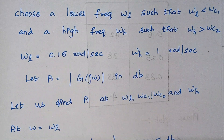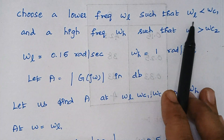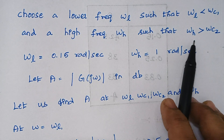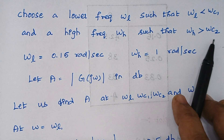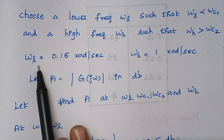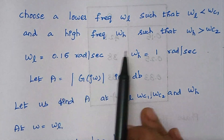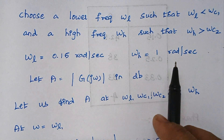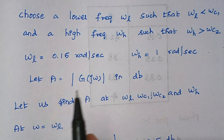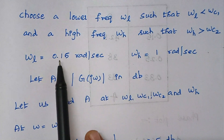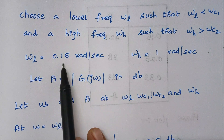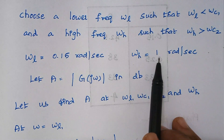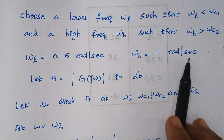Now we have to select two frequencies such that ωl is less than the first corner frequency and ωh is greater than the second corner frequency. We are selecting ωl = 0.15 and ωh = 1. You can also take ωl as 0.1 or even lower, and ωh as 10, 50, or 100 — whatever you prefer.